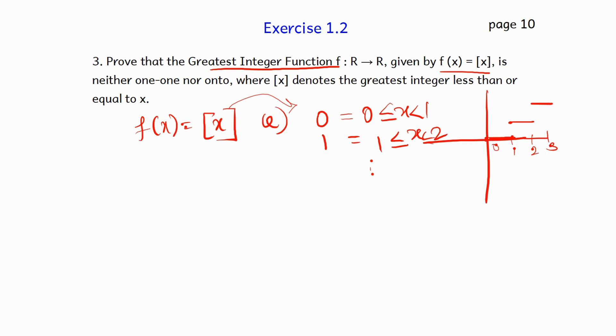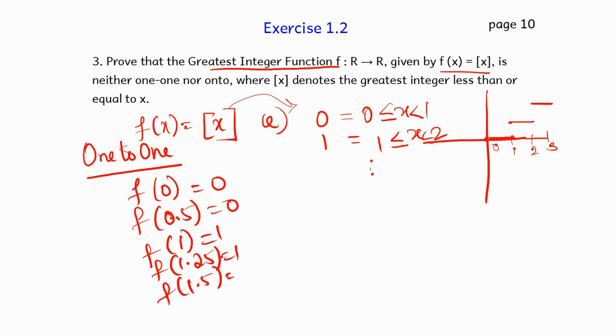To prove f(x), the greatest integer function, is not a one-to-one function, we will take this condition. So first, for one-to-one function, take the value 0. f(0) is 0 in this function. f(0.5) is, in the greatest integer function from 0 to 1 value, f(x) will be 0. So whatever value we take for x, it may be 0.5, 0.25, 0.75, all these values will be equal to 0.